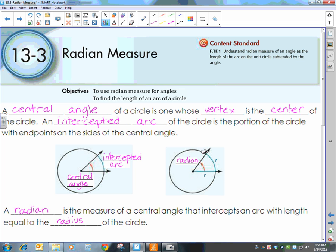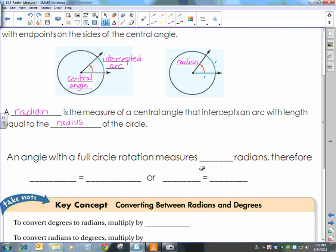Now, hopefully you can see, how many of these does it take to go around our circle? Well, it actually takes 2π radians. Therefore, 2π is equal to 360 degrees, or 1π is equal to 180 degrees.